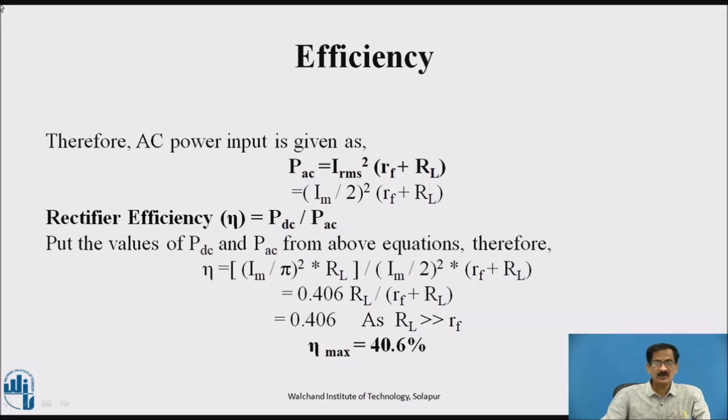The efficiency can be found as: average RMS power equals i-RMS squared into RF plus RL. Rectifier efficiency is P-DC upon P-AC. Efficiency equals im upon π squared into RL divided by im upon 2 squared into RF plus RL. This comes out to be 0.406 RL upon RF plus RL. Since load resistance is very much greater than forward resistance of the diode, the efficiency comes out to be 40.6 percent.